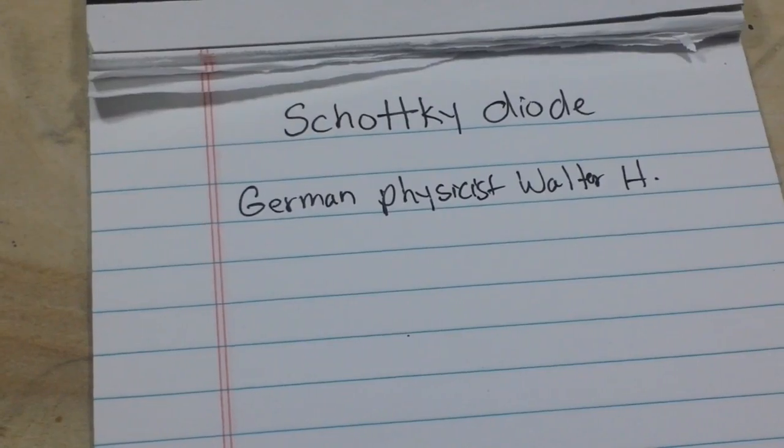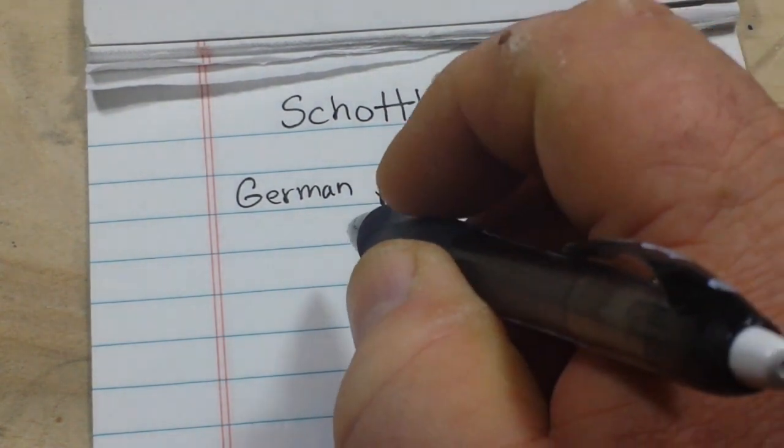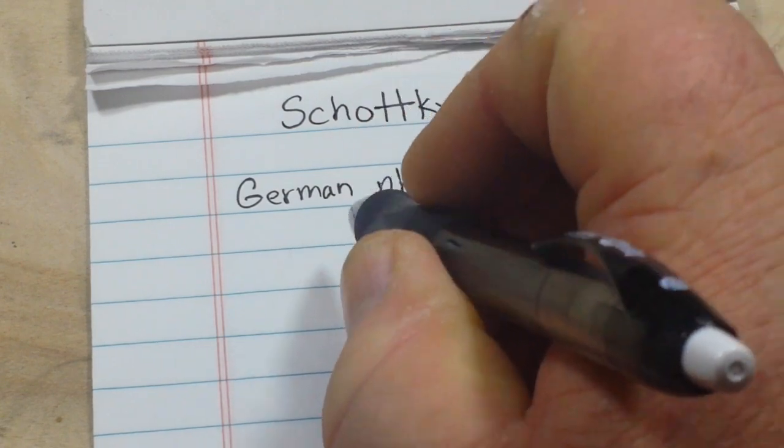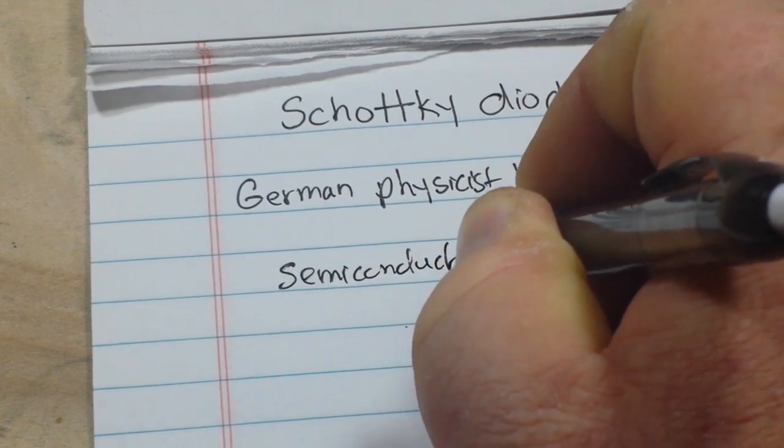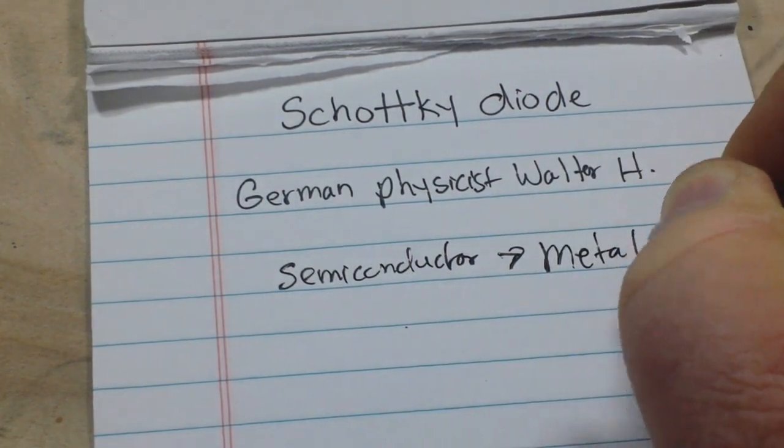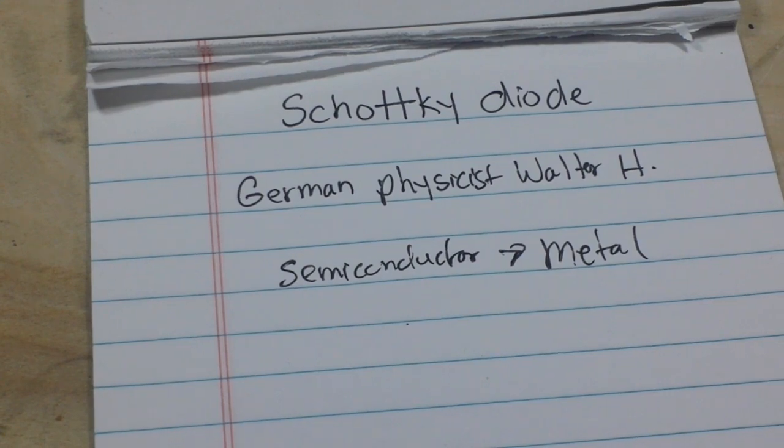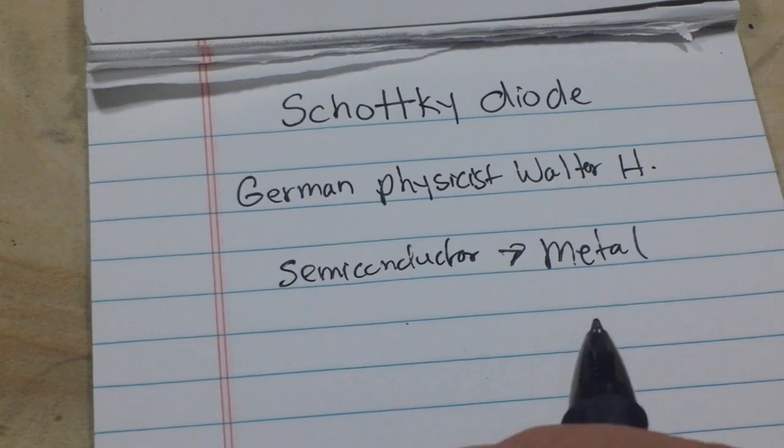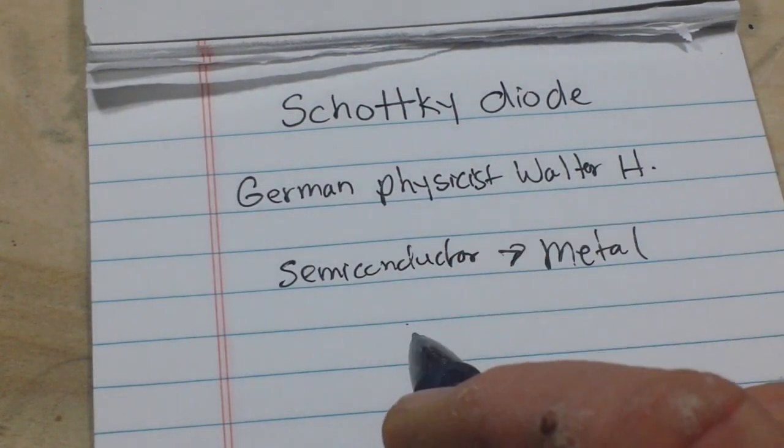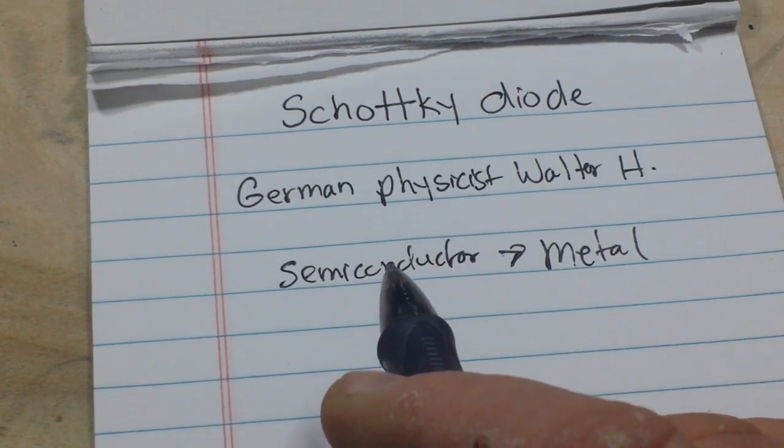Schottky diodes were created by German physicist Walter H. Schottky. The reason they're different from a standard silicon diode is their junction is a semiconductor metal junction, whereas your standard silicon diode is a semiconductor semiconductor junction. Some of the metals that they use are molybdenum, platinum, and chromium. There's others, but those are some of the main ones.